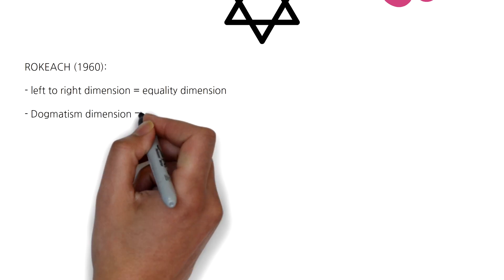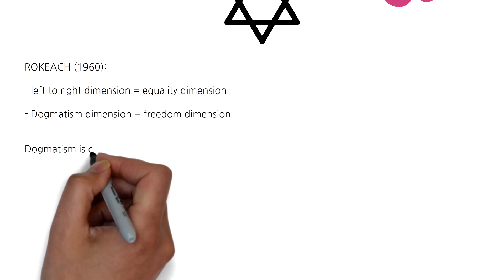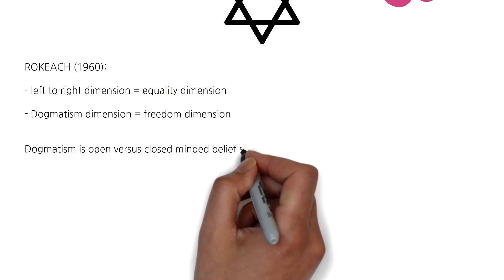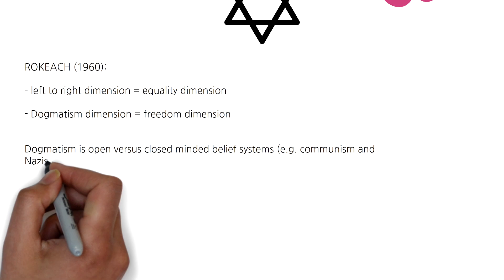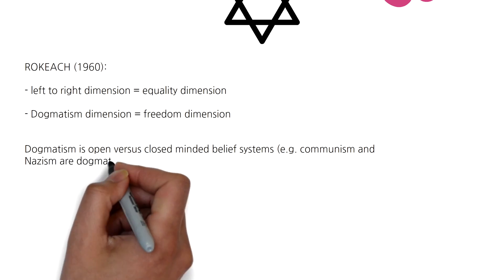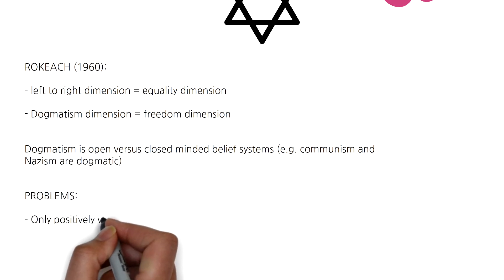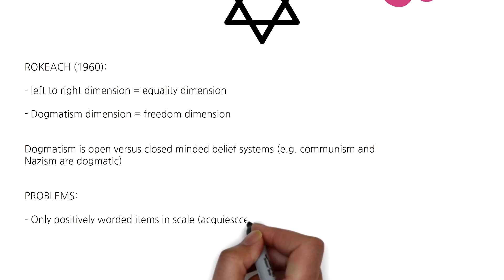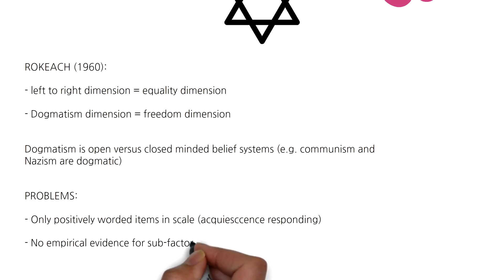Rokeach in 1960 then went on to also propose two independent dimensions: firstly, the left-to-right dimension, which was described as the equality dimension, and the dogmatism dimension, which is referred to as the freedom dimension. For example, both communism and Nazism are dogmatic. The dogmatism dimension examines open-mindedness versus closed-mindedness of belief systems.